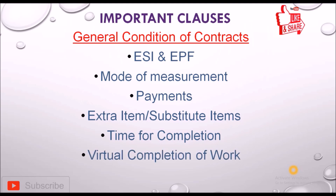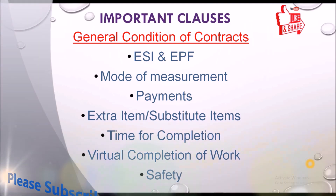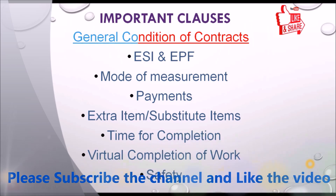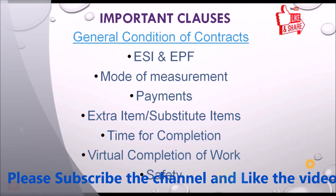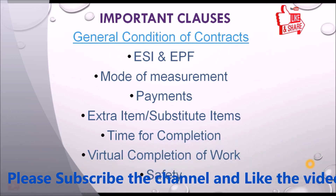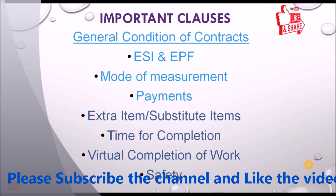Virtual completion of work is the completion of work with minor defects — we give a certificate in the construction field. The safety clause covers all safety codes to be followed, and if the contractor is not following the safety code, a penalty is mentioned. The clauses covered here are: ESI and EPF, mode of measurement, payments, extra items, substituted items, time for completion, virtual completion, and safety.